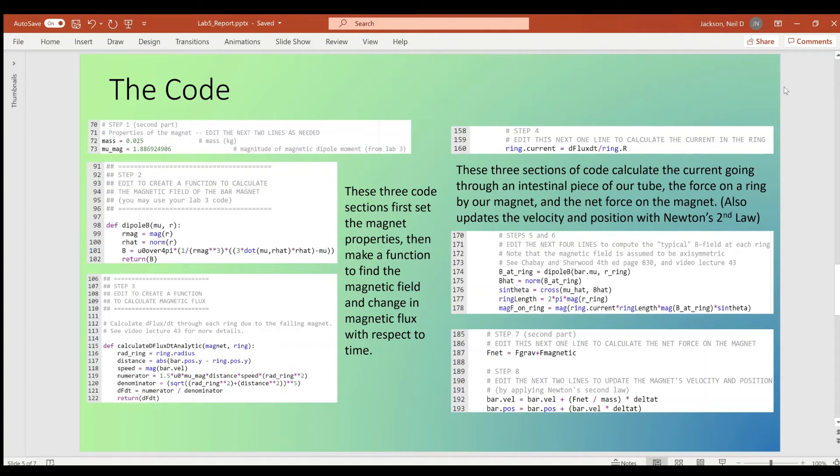And on the right, I have the other four steps that help us find the current of a singular ring, the force that ring is exerting on the magnet, and it allows us to update the magnet's velocity and position as it moves through our tube.